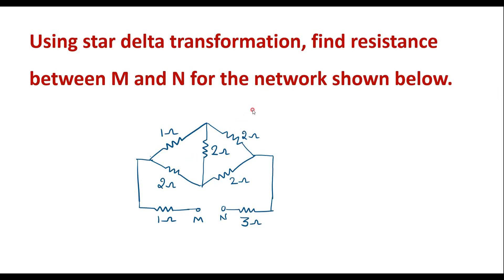In this video, I will consider one numerical on star-delta transformation. Using star-delta transformation, find the resistance between M and N for the network shown below. We are supposed to find R_MN, which we will calculate using star-delta transformation.